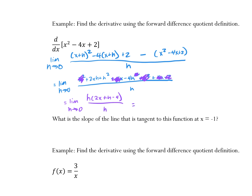Then we take our limit. The h's cancel. As h goes to 0, the value of 2x + h minus 4 becomes 2x minus 4, because that h becomes 0.